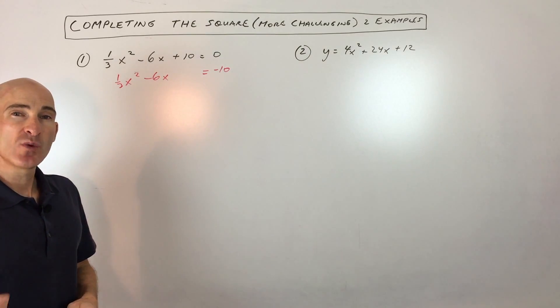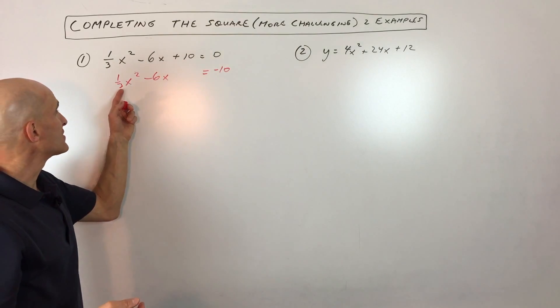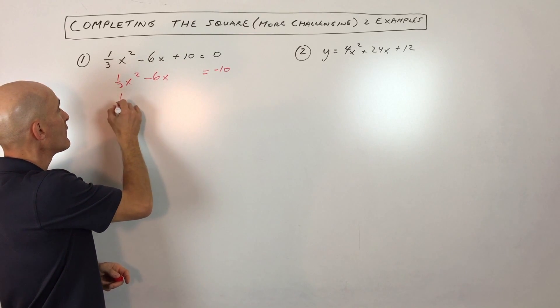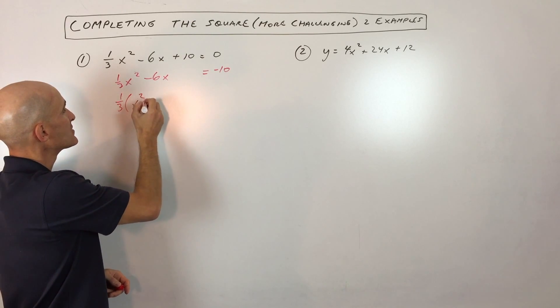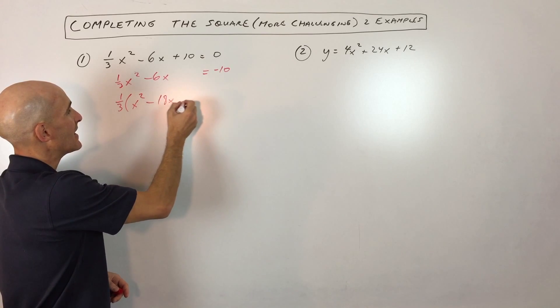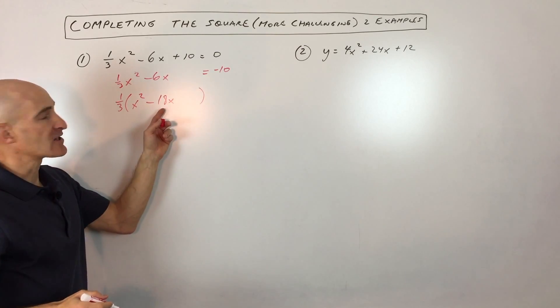Now what you want to do is factor out that leading coefficient. In this case it's one-third. So we're going to factor out the one-third. This is going to be x squared and this is going to be negative 18x.